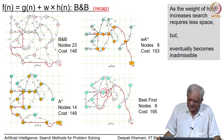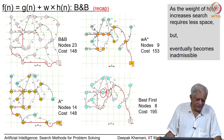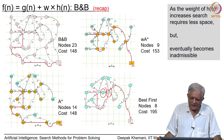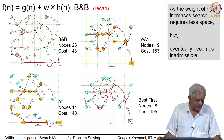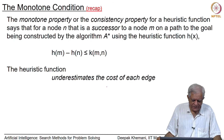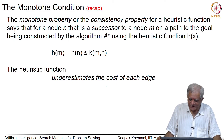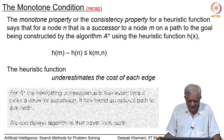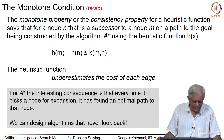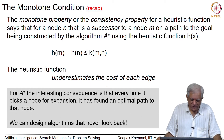We then decided we still want to save space, so we looked at IDA* and RBFS, and then we looked at situations where, under the monotone condition, you can afford to prune the closed list. We explored that in the last session and I will quickly go over these slides as a recap.